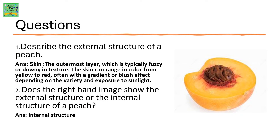Describe the external structure of a peach. The external structure of the peach contains the skin, the outermost layer, which is typically fuzzy or downy in texture. The skin can range in color from yellow to red, often with a gradient or blush effect depending on the variety and exposure to sunlight.